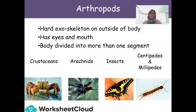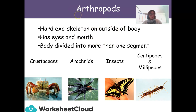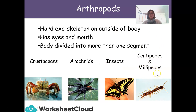Arthropods are covered in detail in the Grade 7 curriculum. They have a hard exoskeleton on the outside of the body, eyes and a mouth, and their body is divided into more than one segment — they can have a head, body, and thorax. Sometimes their head and thorax are joined to form the cephalothorax, and then the abdomen. We look at crustaceans like crabs, arachnids like spiders — you've all heard of arachnophobia — insects, and centipedes and millipedes.